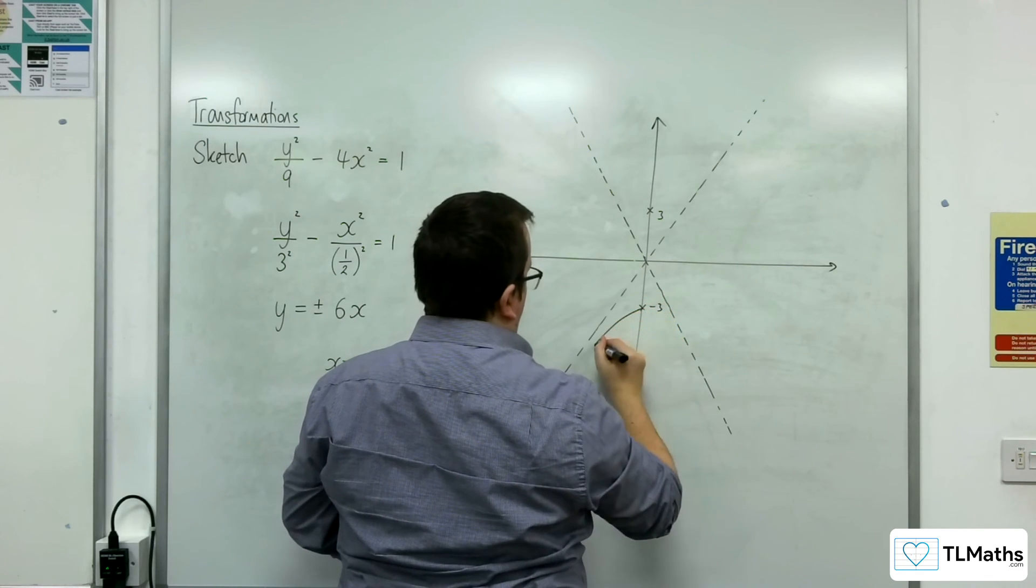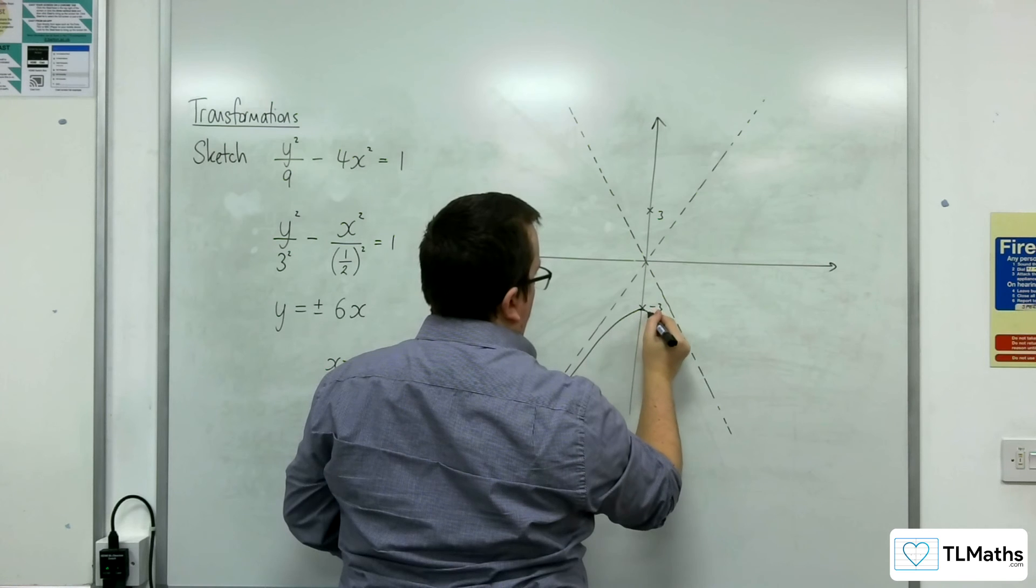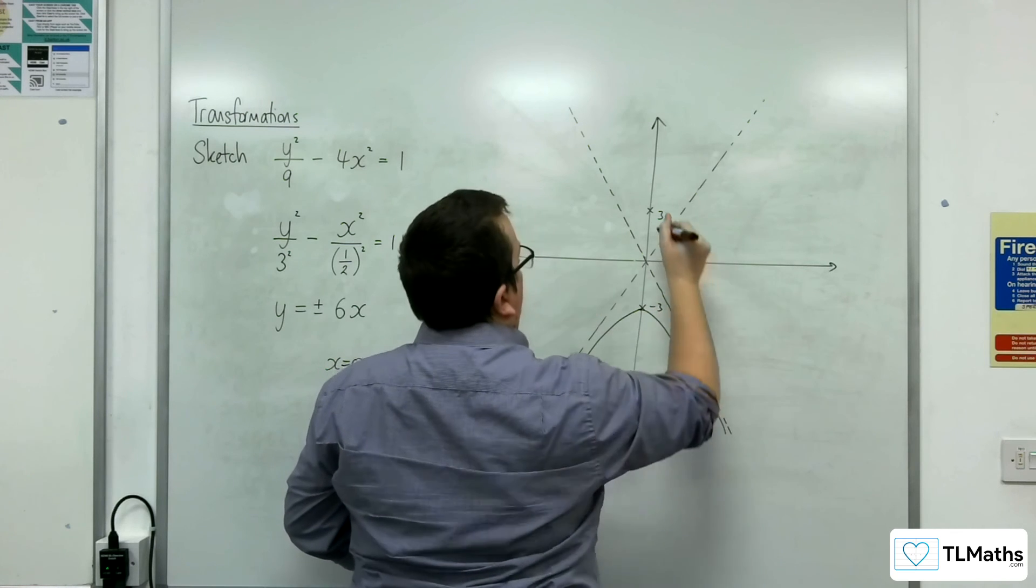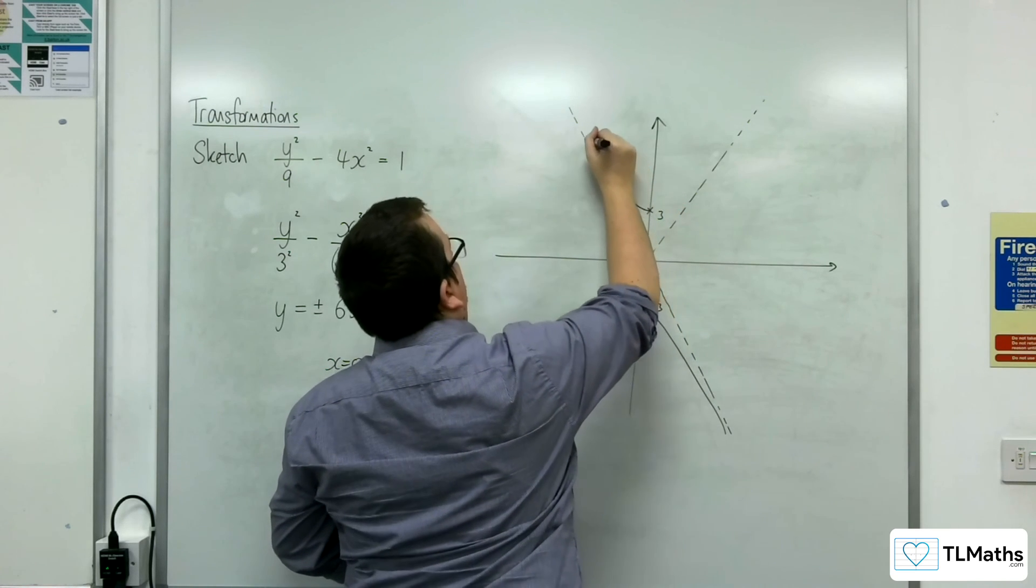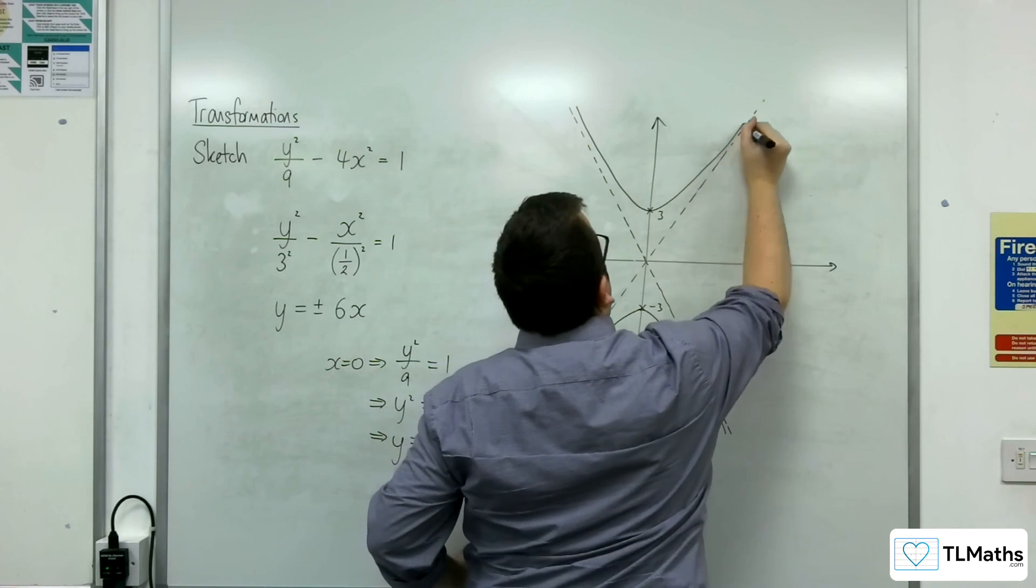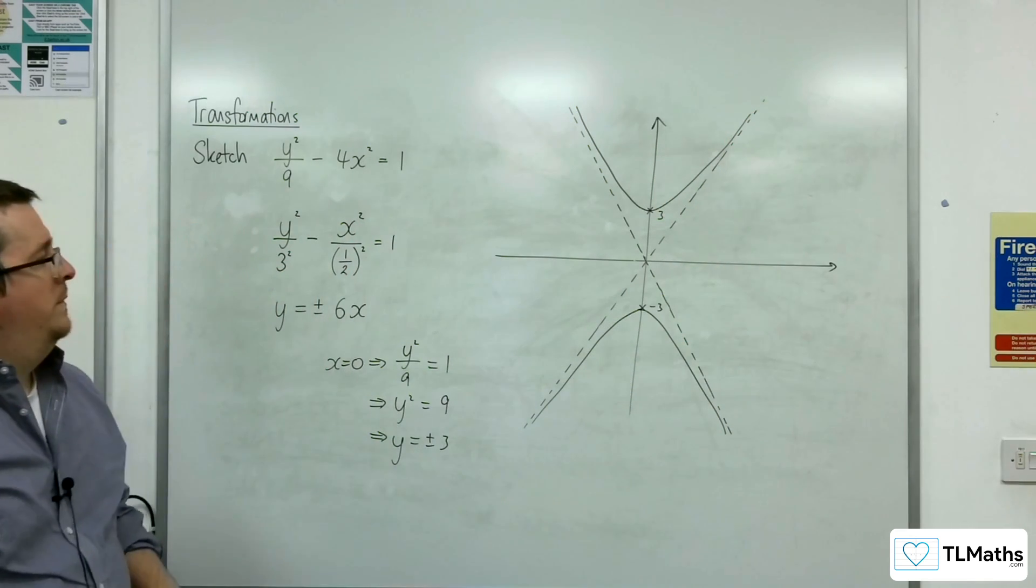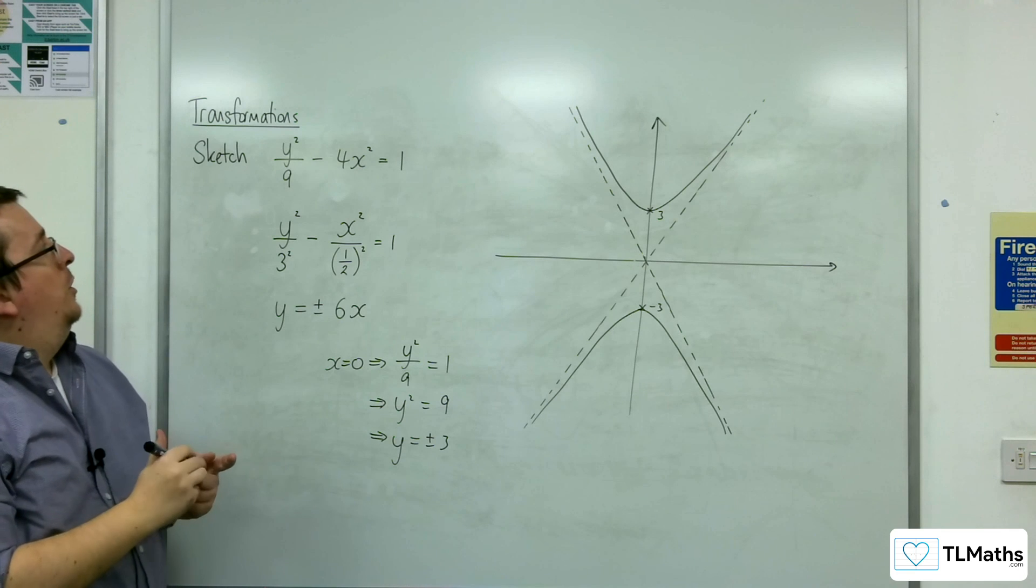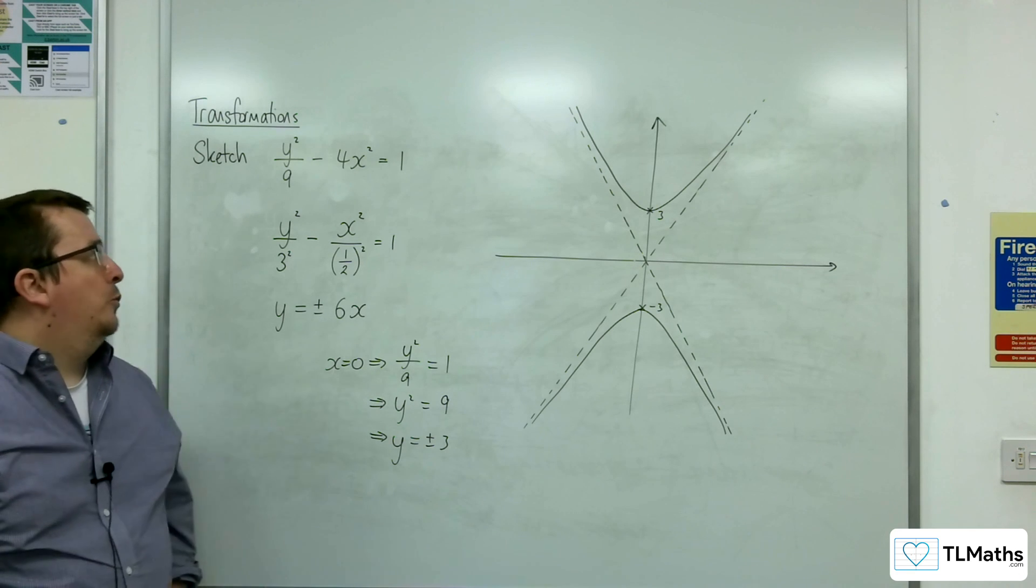And so the curve looks like this. And so that is a sketch of the curve y squared over 9 take away x squared over 4 equals 1.